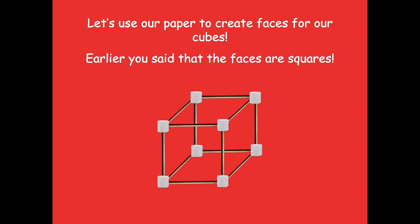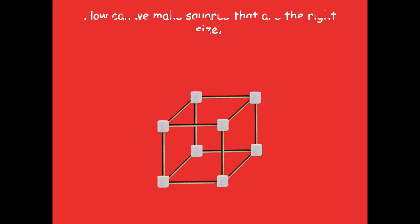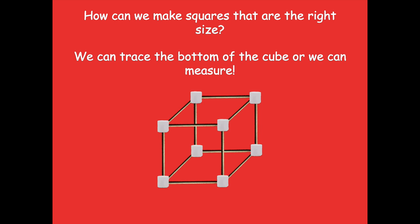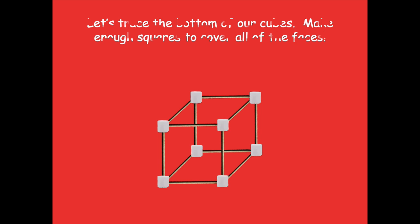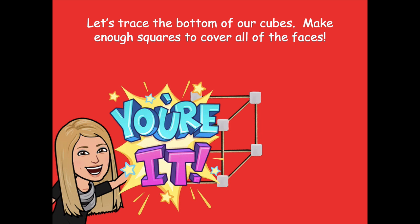We said that the faces are squares, so how can we make squares that are the right size? We could trace the bottom of our cube — that would give us the right size — or we could measure it. Let's trace the bottom of our cubes. Take one sheet of paper, trace the bottom of your cube, and make enough squares to be able to cover all of the faces. Pause the video, make enough squares, stick them on your cube, and click play when you're ready.